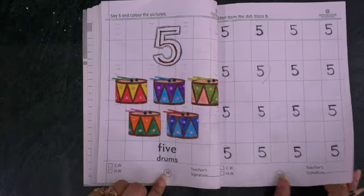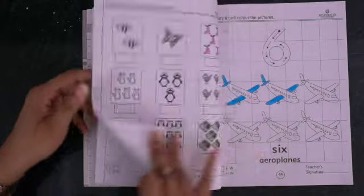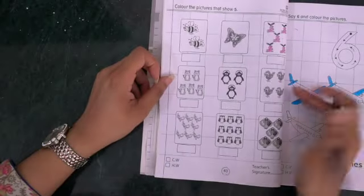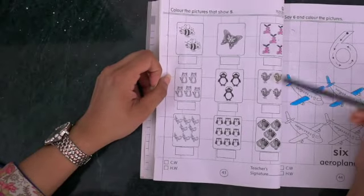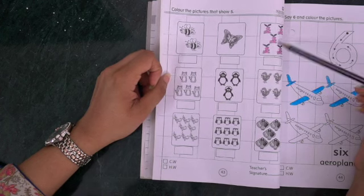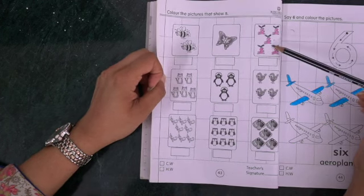This is our complete number five. Page number 39, 40, 41, 42, and page 43 has a small activity. In this, you need to color in the boxes, color the animals that are five in number, just like I have done here.